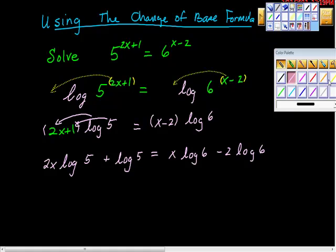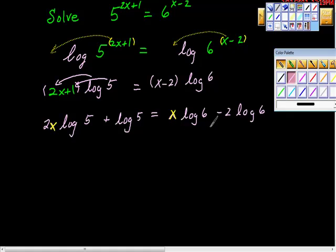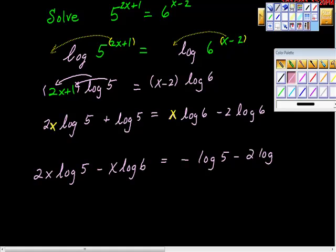And now what we're going to do is something that you're probably really familiar with, which is to move everything that has an x. Look, we have an x here, and we have an x here. And what we want is all terms that have values of x on one side and everything else on the other side. So I'm just going to move stuff around algebraically. I'm going to add negative x log of 6 to both sides, and we'll get 2x log of 5. I'm going to subtract this from both sides, so minus x log of 6. And then I'm going to add the opposite of this to both sides, so equals negative log of 5 minus 2 log of 6. And that's a mess, isn't it?